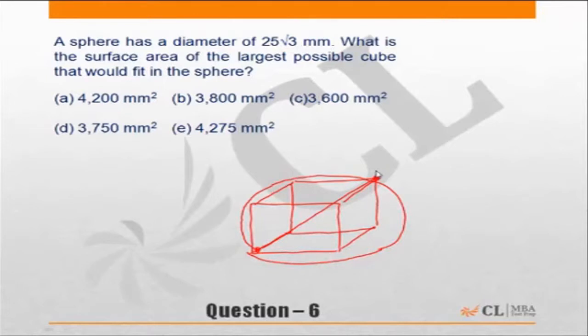The body diagonal of this cube is equal to √3·a. So √3·a is given as 25√3. That means the side of the cube will be 25, and we need to find out the surface area.